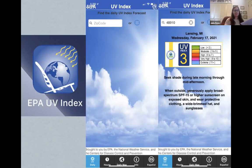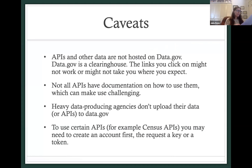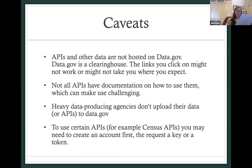The UV Index API could also be helpful if you're building a website or app about outside activities — you can integrate this API and allow users to plug in their zip code, or use location detection on their device, so users can easily see how at risk they are for sun damage and what precautions they should consider taking. One thing to note is that data.gov is just a clearinghouse, so the data is not hosted on data.gov. On occasion, when you click on links, they might not work or might take you to a different site. This is especially true of older data sets whose links may have changed since the record was originally created. At least on the landing page, you do get some contact information to reach the person responsible.